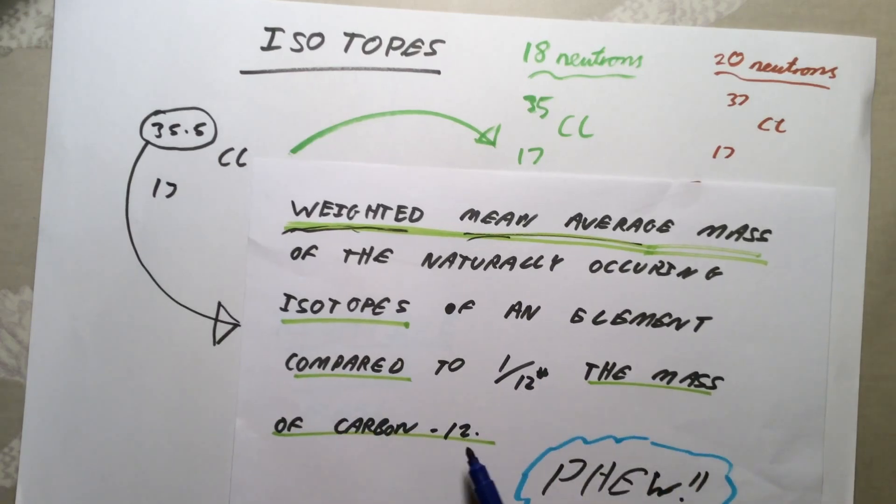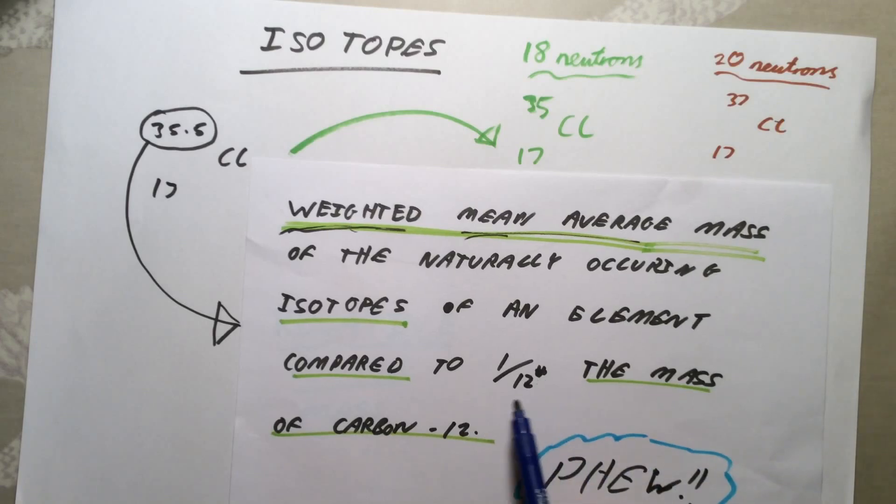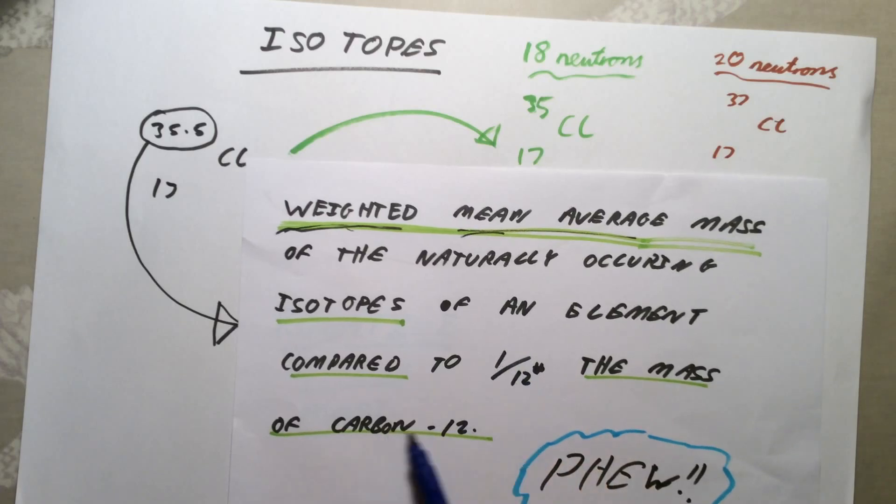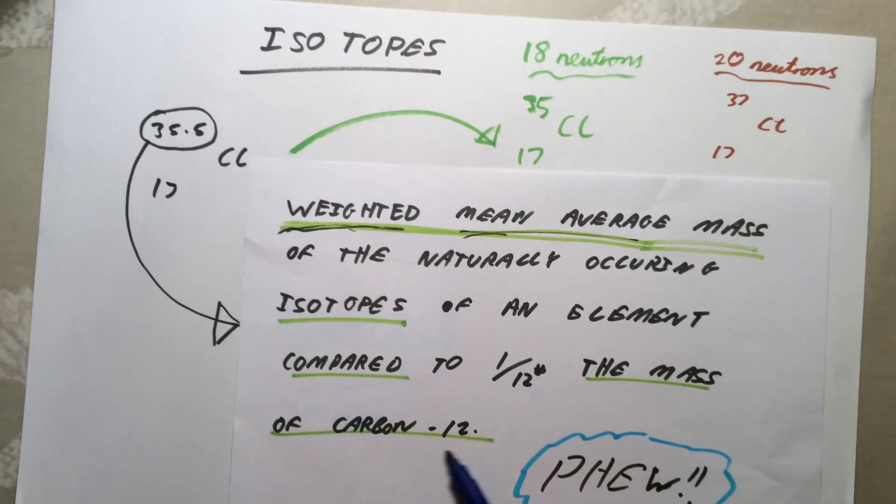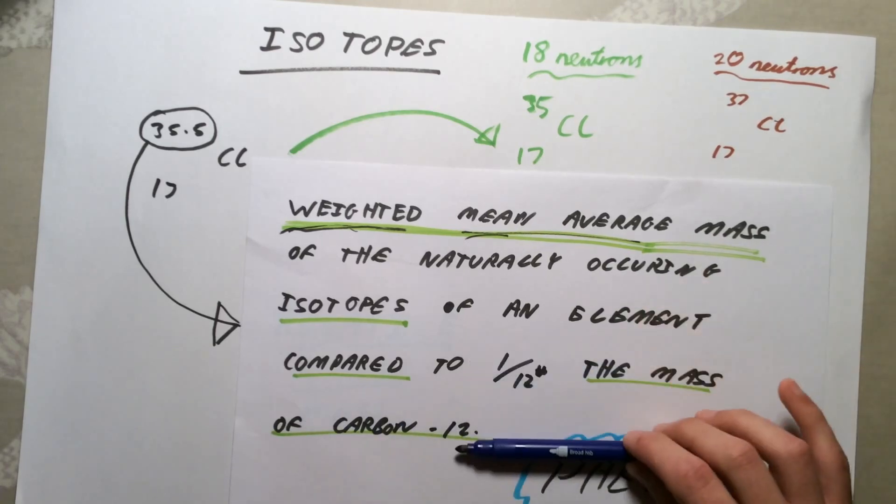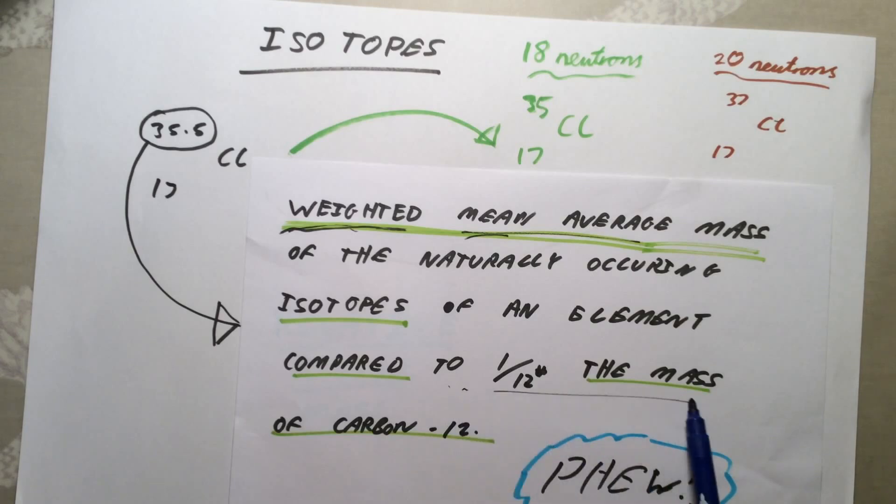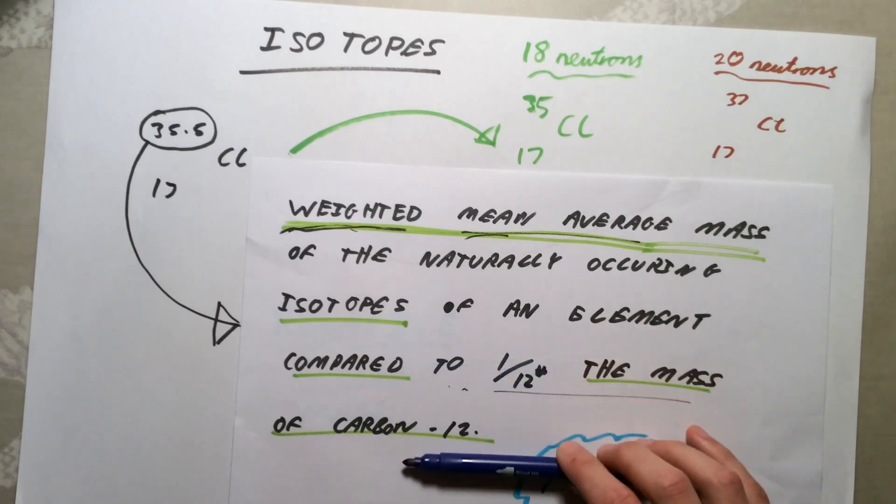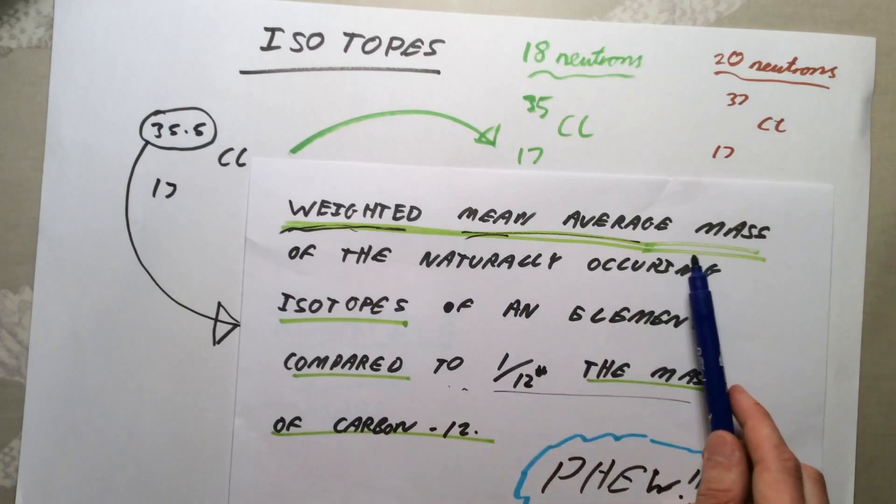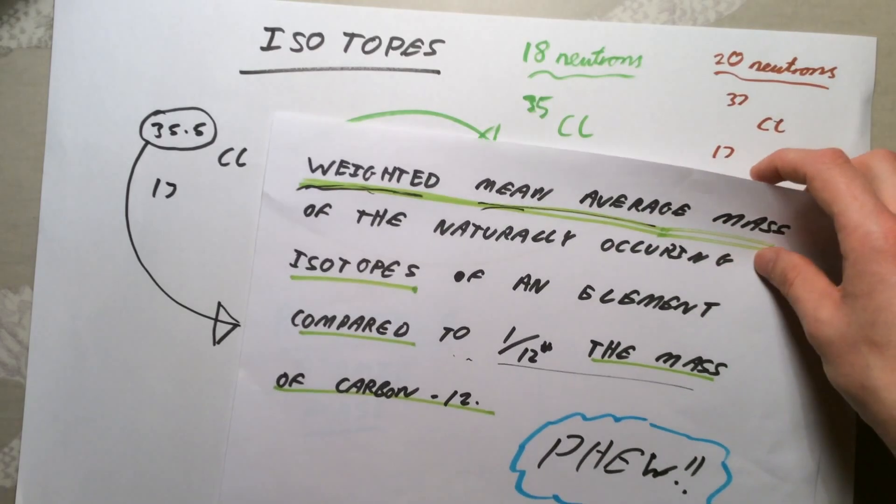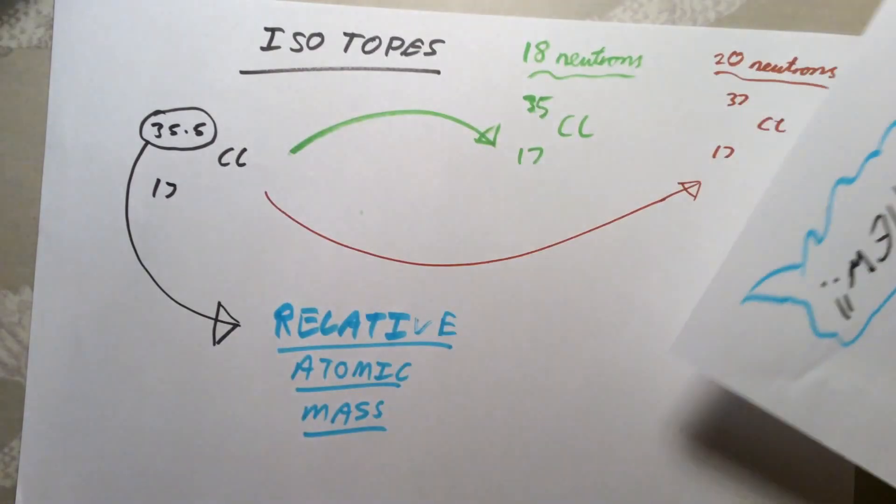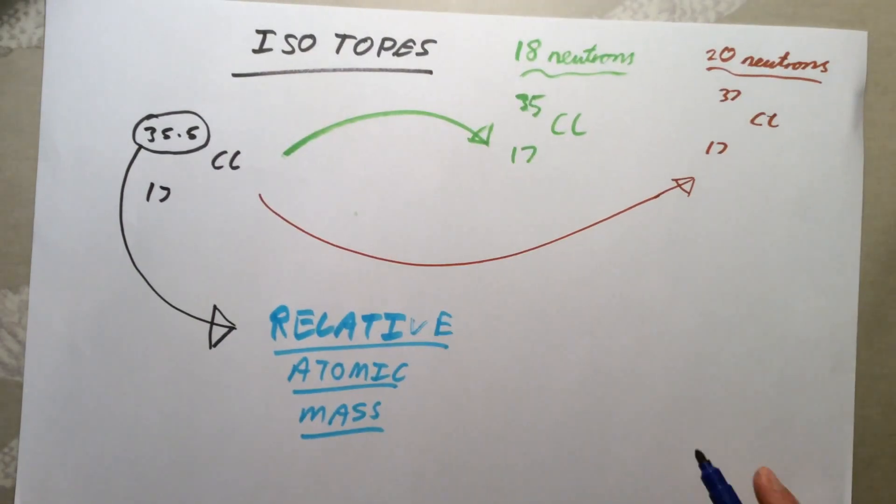This part here, compared to 1/12 the mass of carbon-12, this really is the AS definition. We take all of the atomic numbers, or we always compare them to carbon-12, just because that was one of the most commonly understood and known about elements. It gives us a good reference point. Don't worry too much about this. There has been a mark on the exam for saying compared to 1/12 mass of carbon-12, so do remember that. But the key part really is the weighted mean average mass of the isotopes of an element. So write that down, cover it up, try and write it out from memory until you've learned that. That is our definition of relative atomic mass.